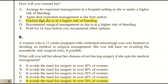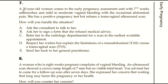Question number seven: A 20-year-old woman comes to the early pregnancy assessment unit at seven plus six weeks with amenorrhoea, mild to moderate vaginal bleeding, and occasional abdominal pain. She has a positive pregnancy test but refuses a transvaginal ultrasound scan. How will you handle this situation? Options: ask the consultant to talk to her, ask her to sign a form refusing medical advice, refer her to radiology for the earliest available scan, respect her wishes but explain the limitations of transabdominal versus transvaginal ultrasound, or send her back to her GP.